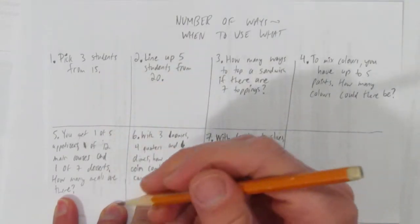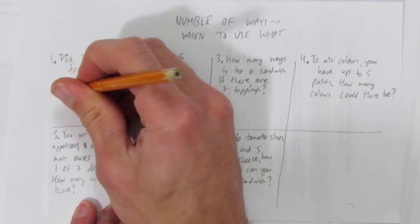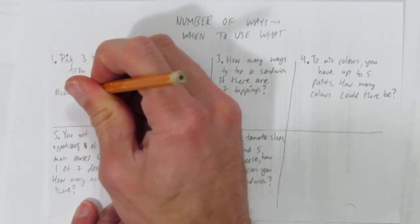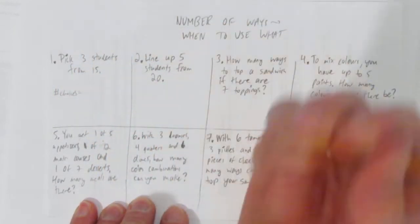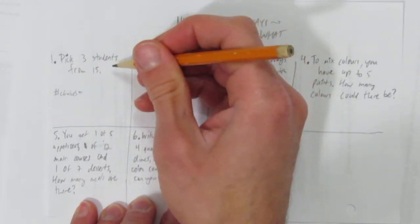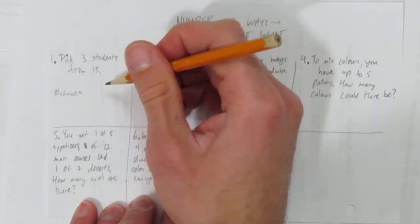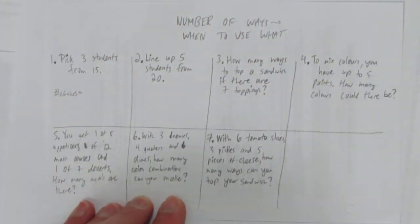Pick three students from 15. That's number of choices. In this situation, I'm picking three students. Ask yourself, does order matter? If you pick student one, then two, then three, is that the same as picking student three, then two, then one? You betcha. Since order doesn't matter, it's combinations.